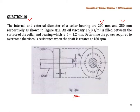An oil with viscosity 1.5 N·s/m² is filled between the surface of the collar and bearing, where the thickness t is equal to 1.2 mm. We need to determine the power required to overcome the viscous resistance when the shaft is rotated at 180 rpm.